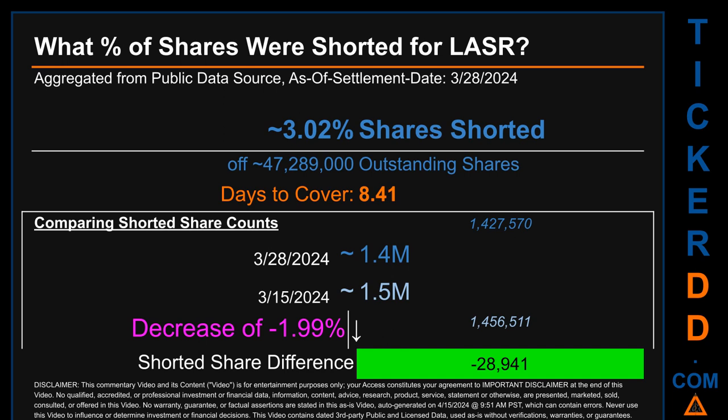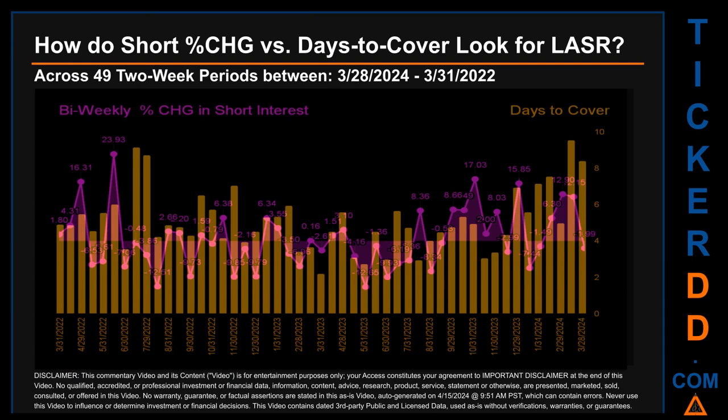When comparing the current two-week period data snapshot against the previous period ending on settlement date March 15, 2024, the current snapshot had roughly 28.9 thousand fewer shares shorted. This means that compared to the previous snapshot, the current snapshot has a decrease of minus 1.99% of shorted shares. Zooming out, I looked across 49 two-week snapshots from the latest found March 28, 2024, to the oldest found March 31, 2022. In the graph, I overlaid bi-weekly percentage change in short interest against days to cover. The average percentage change of short interest was about 0.6%.